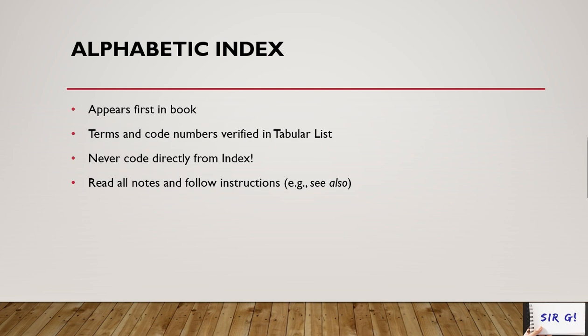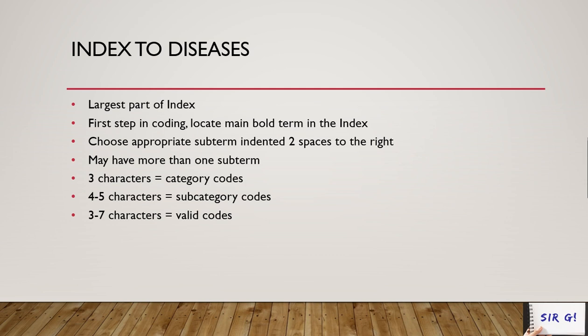For those who already have their book, the alphabetic index appears on the first part of the book — those are the terms and code numbers that must be verified in the tabular list. Never go directly from the index without verifying the code in the tabular list, because there may be additional digits or instructions there.